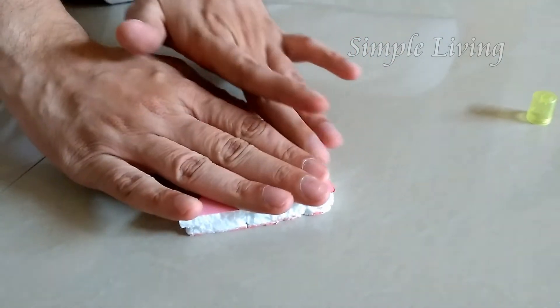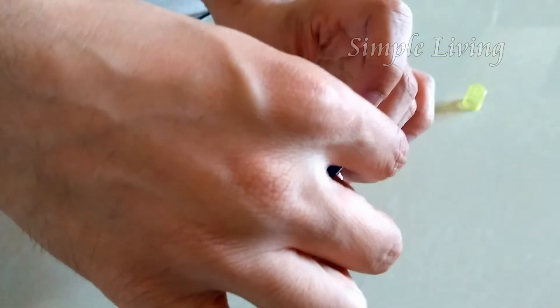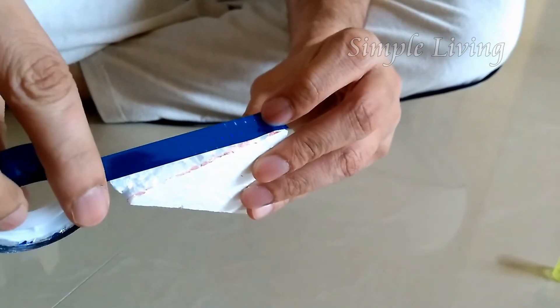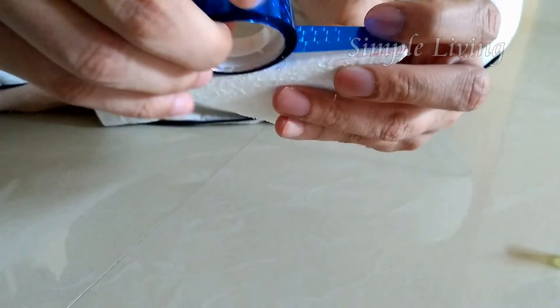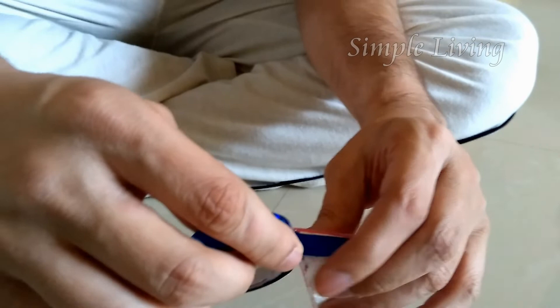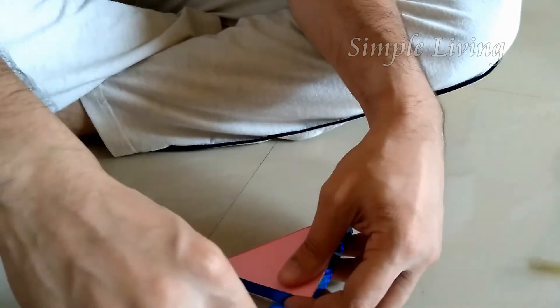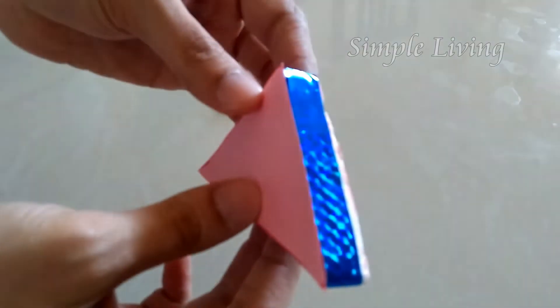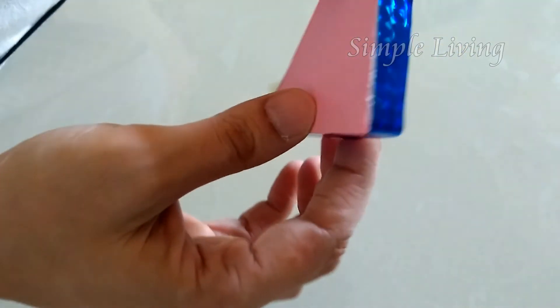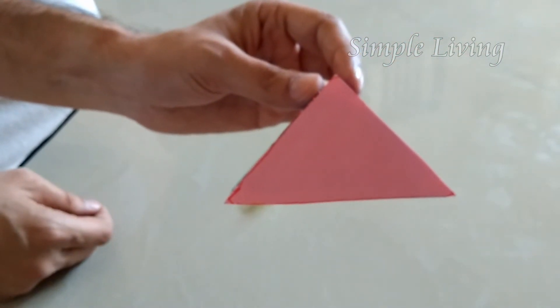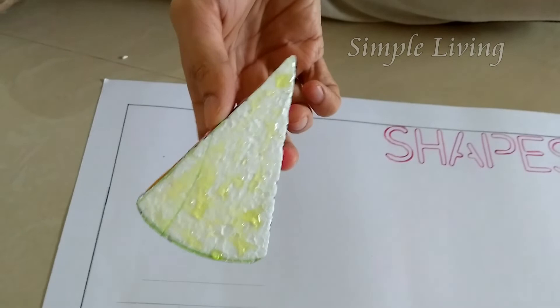So like this I will do it. Triangle is ready. These we can paste here. So for the cone, what we need is, again I will make it. Pink and blue combination, I will paste like this. Triangle is ready. And for the cone, what we need is...